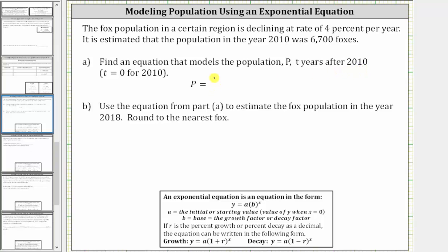We will model the population using an exponential equation in the form y equals a times b raised to the power of x. Because the population is declining at a rate of 4% per year, we have exponential decay, and therefore the base b is equal to one minus r, where r is the decay rate as a decimal. So we'll write the equation in the form y equals a times the quantity one minus r raised to the power of x.